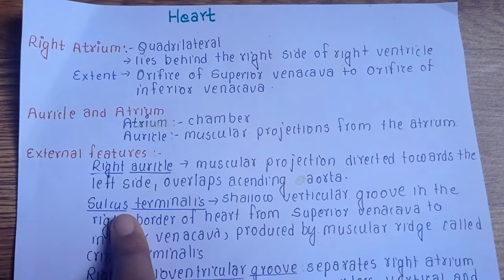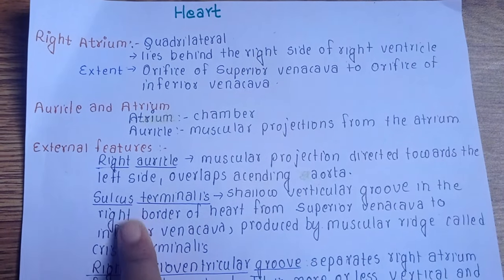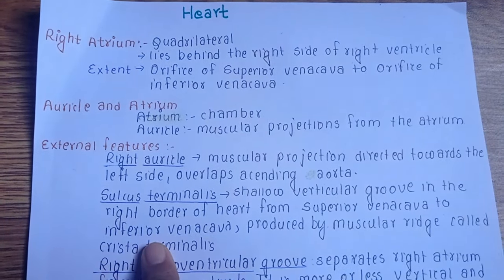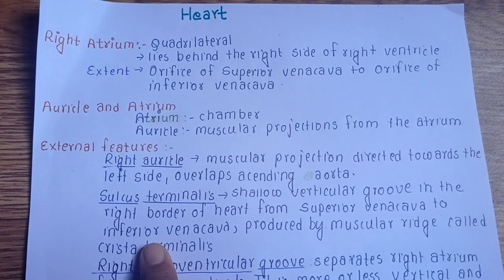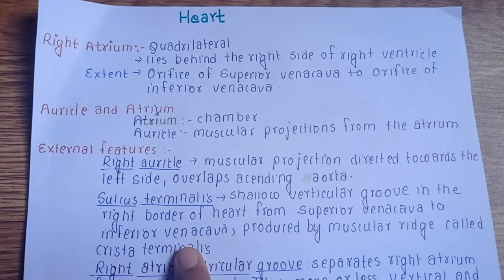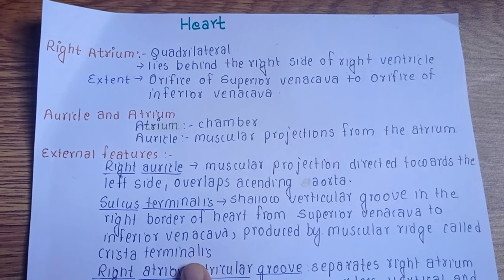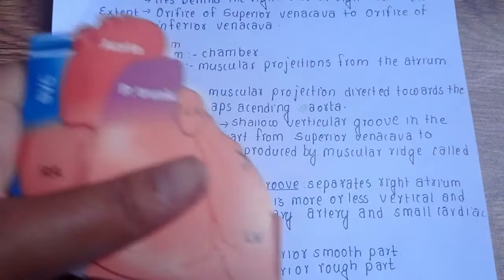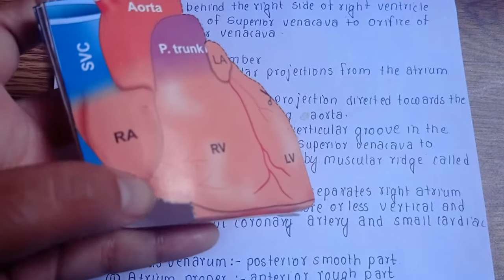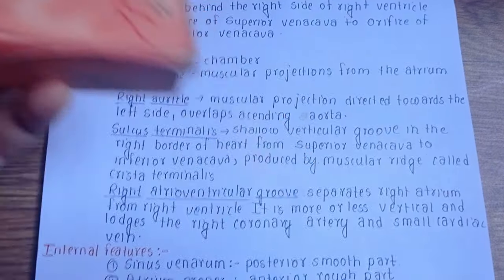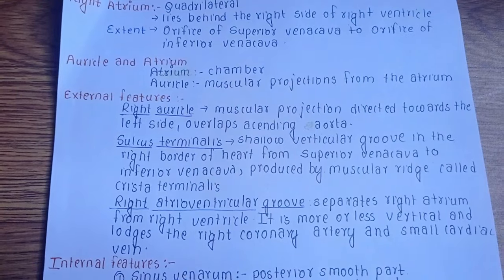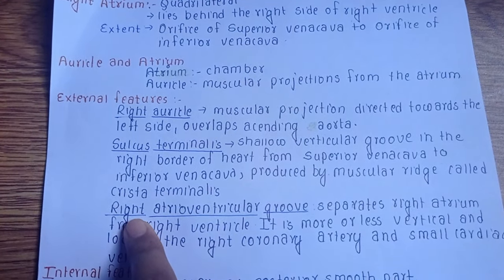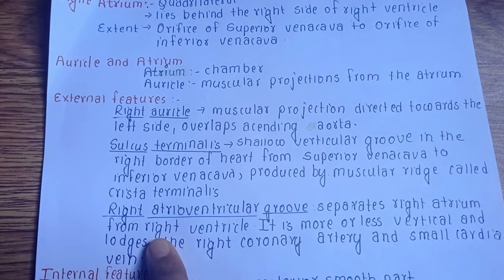The second external feature is the sulcus terminalis. It is a shallow vertical groove in the right border of the heart, extending from the superior vena cava to the inferior vena cava. This groove is produced by a muscular ridge called the crista terminalis.